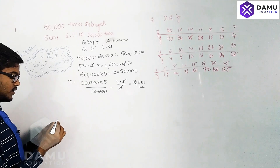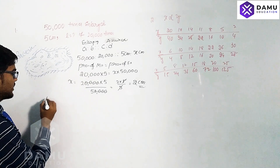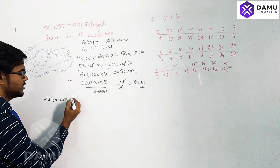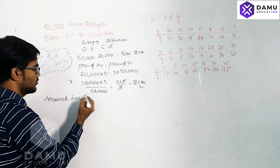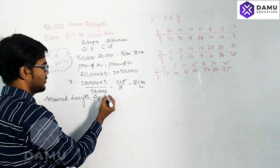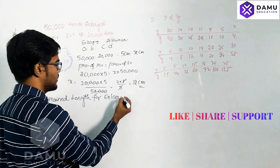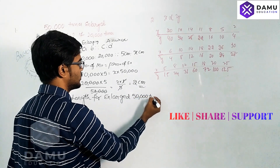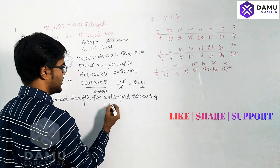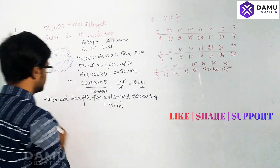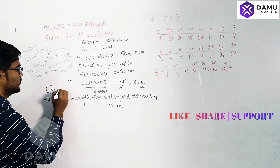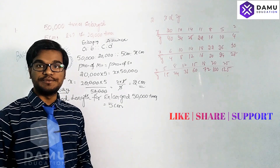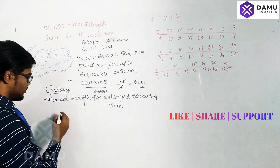In the unitary method: for enlarging 50,000 times, the attained length is 5 centimeters. From this, we find the attained length for one time enlargement.